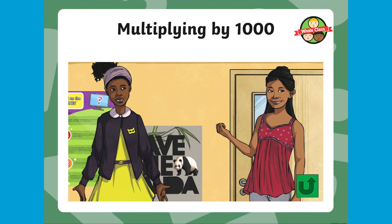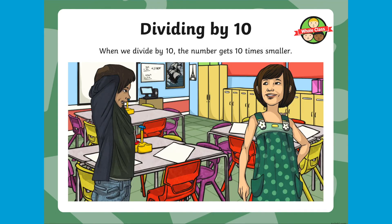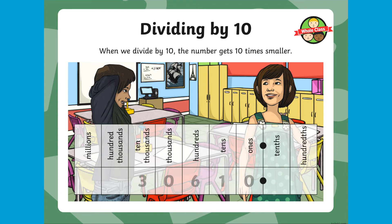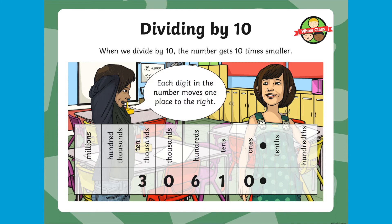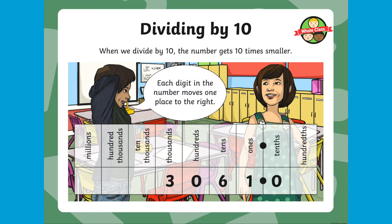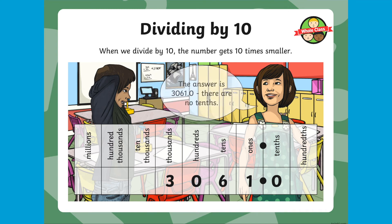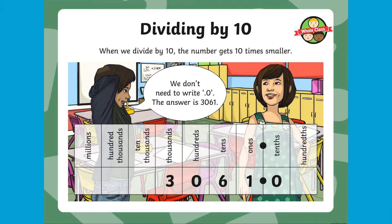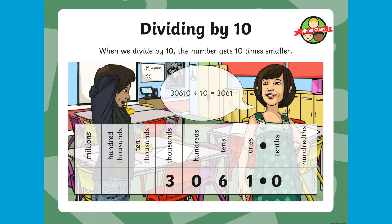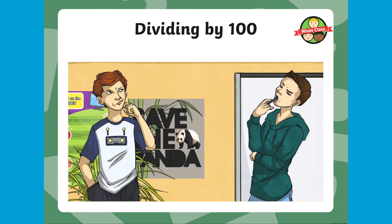Dividing by 10, 100, and 1000 is very similar; however, instead of moving digits to the left, we'll be moving them to the right. So let's start with 30,610. Dividing by 10, our digits will only move one place — the number is getting 10 times smaller, but this time to the right. So 30,610 divided by 10 is 3,061.